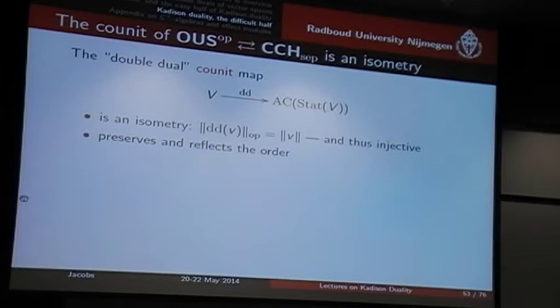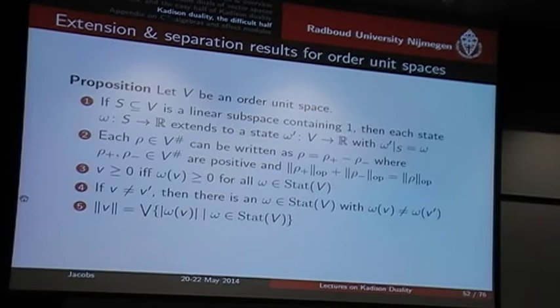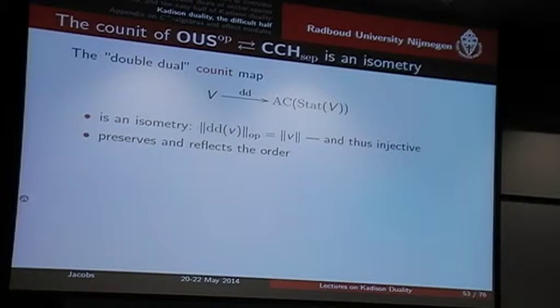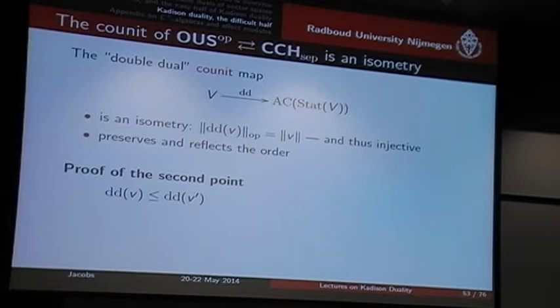Now, let's look at the co-unit itself. Our aim is to prove that it's an isomorphism — or in part, that it's an isometry — and the fact that it preserves and reflects the order. The fact that it's an isometry follows fairly directly from this property. I'll focus on the second property and briefly show you the proof.